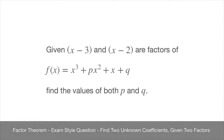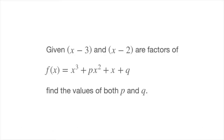We now look at another example of an exam-style question involving the factor theorem for polynomials. We're given that x minus 3 and x minus 2 are factors of f of x, which equals 2x cubed plus px squared plus x plus q, and we need to find the values of both p and q.